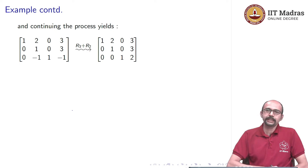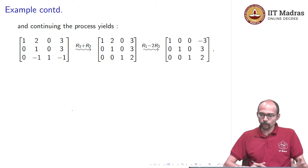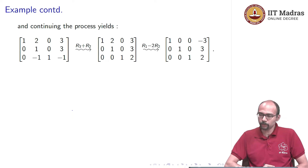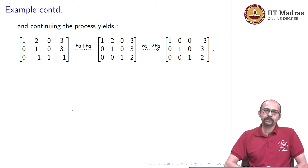This is already in row echelon form. But we can go one step further and do reduced row echelon form. If we do that, we get 1 0 0 minus 3, 0 1 0 3, 0 0 1 2. We have reached our matrix in reduced row echelon form.